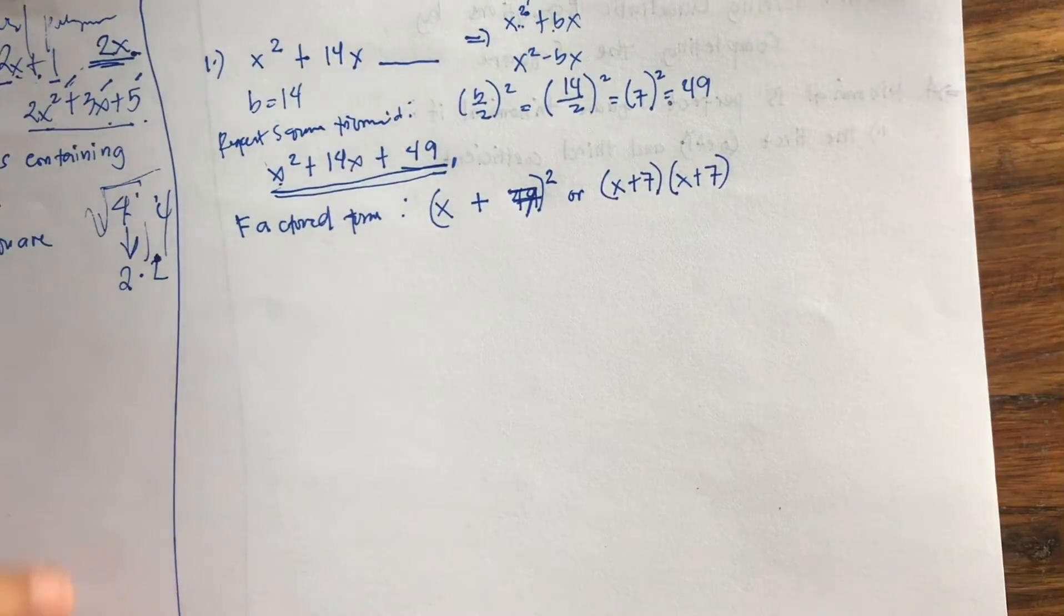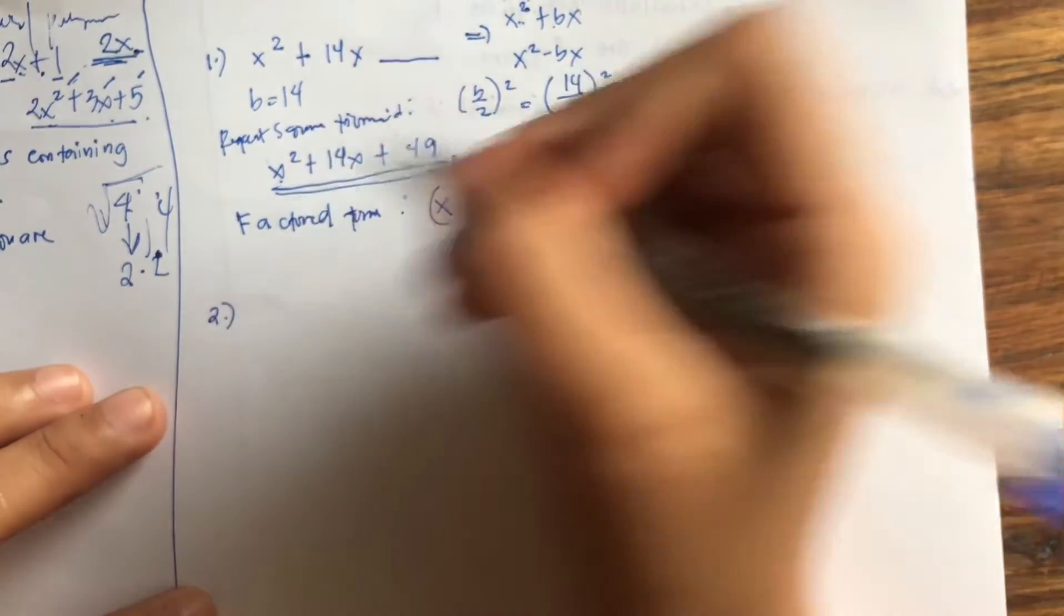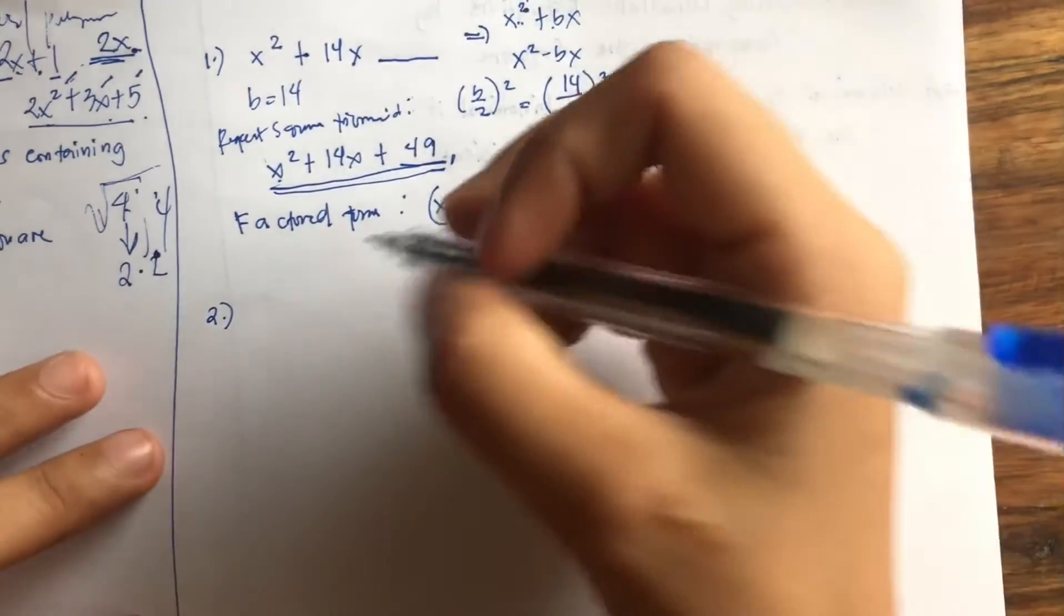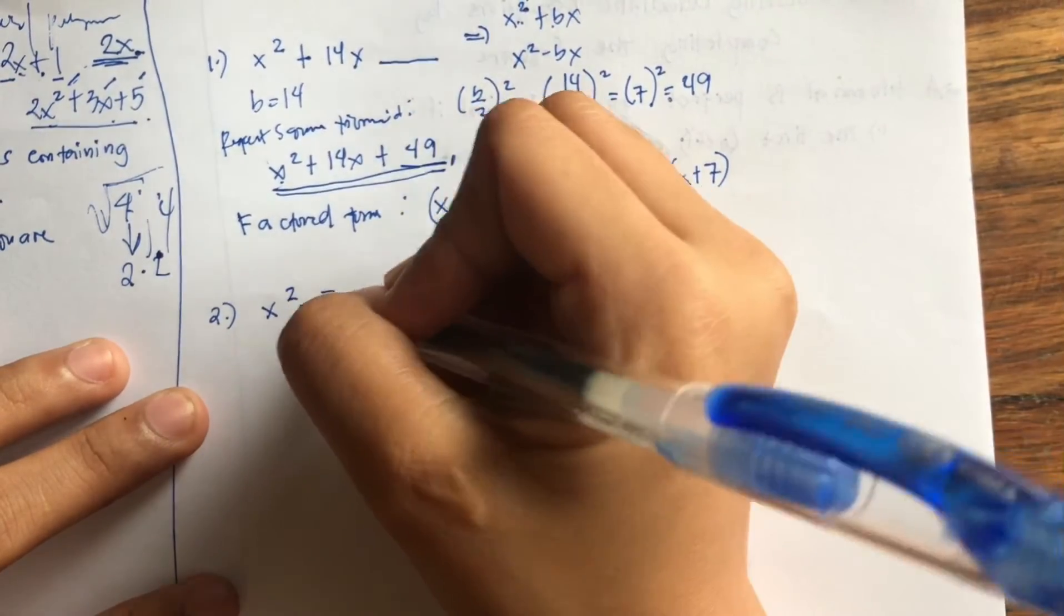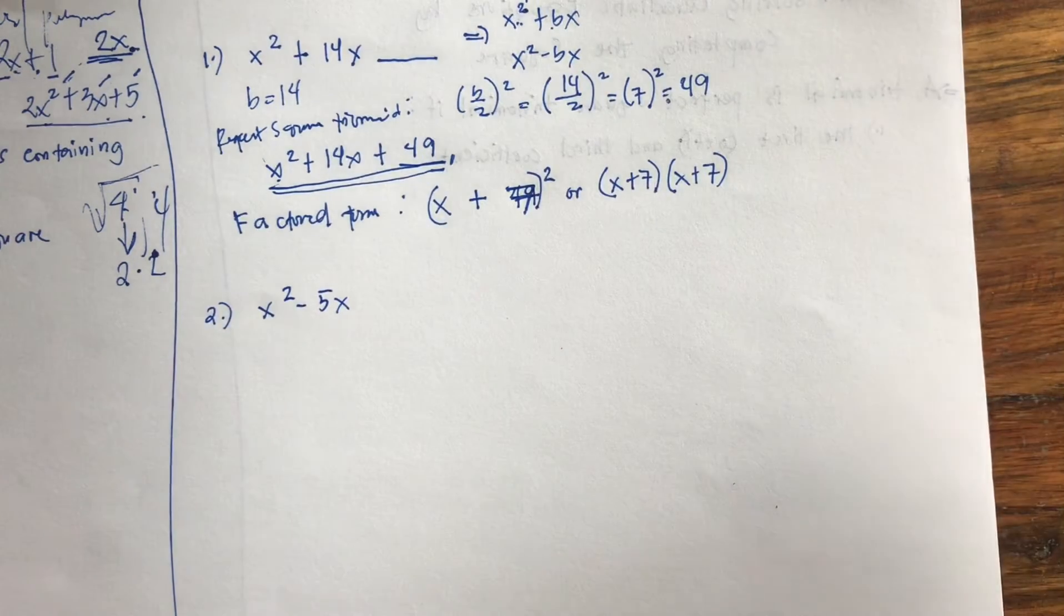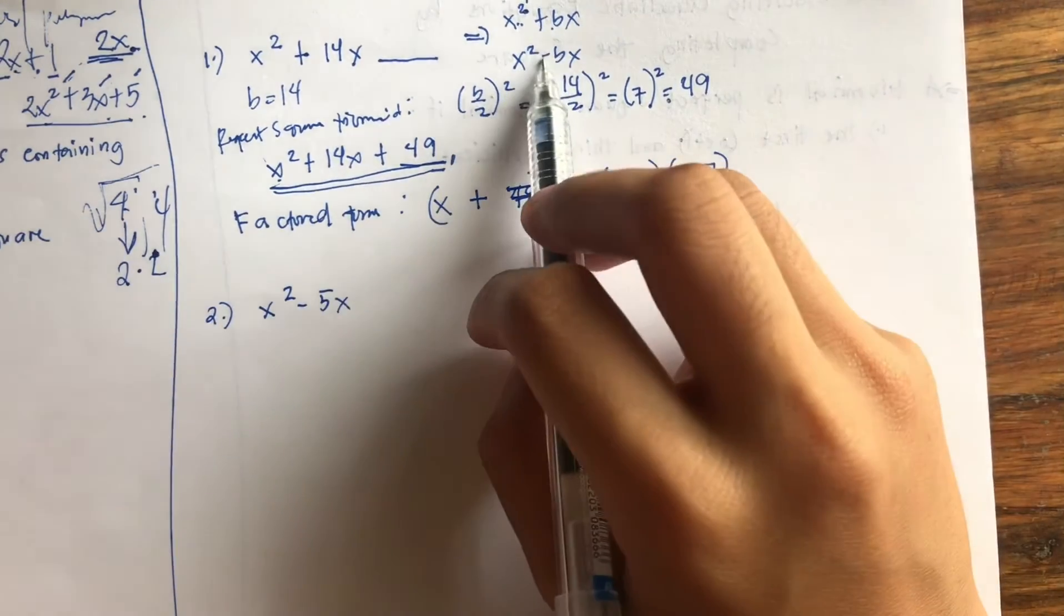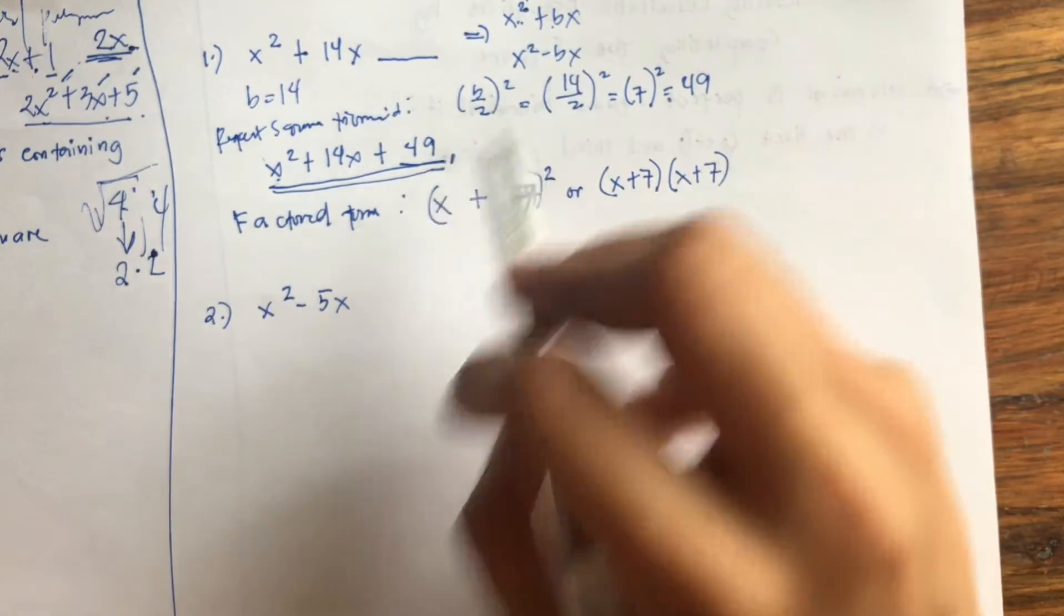Okay, shall we have another example? Let's have x squared minus 5x. So this is of the form x squared minus bx, since our middle operation is negative, or we're using the negative sign.